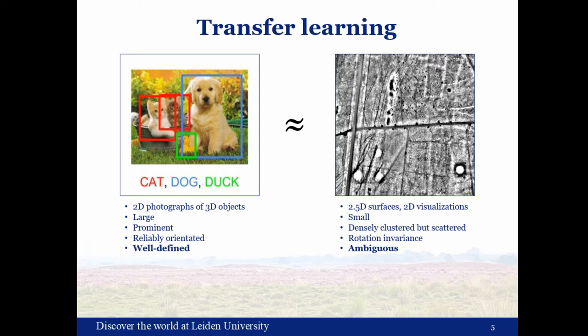But maybe most importantly, we have well-defined objects and classes versus much more ambiguous archaeological interpretations. So we were wondering whether it would be possible to make a large training dataset for archaeology from LiDAR data. Such a dataset could either be used to pre-train a network, or used as a source to supplement existing small datasets and extend those in order to improve the fine-tuning of a pre-trained network.